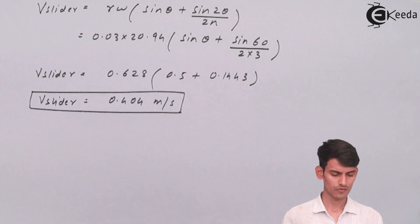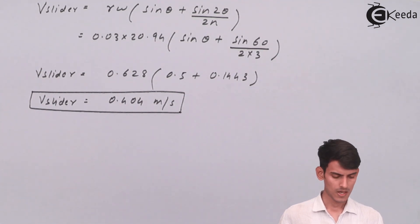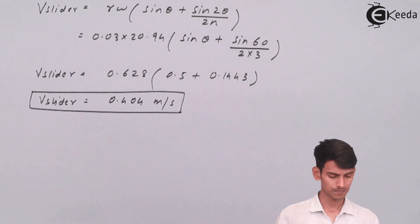The velocity of slider comes out to 0.404 meters per second. Now next is the acceleration of slider.